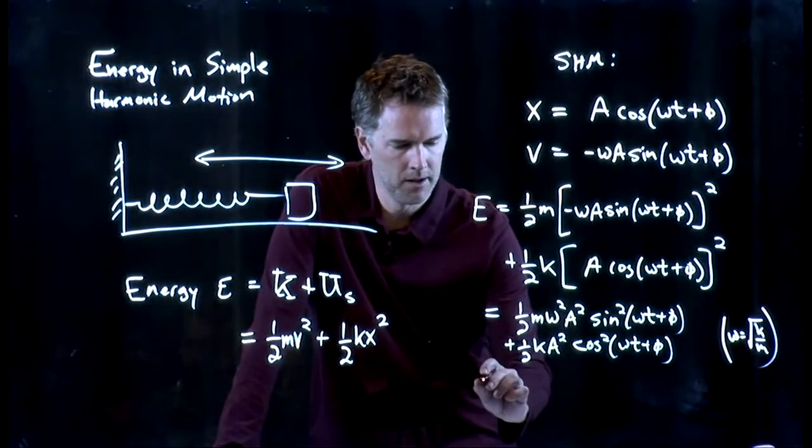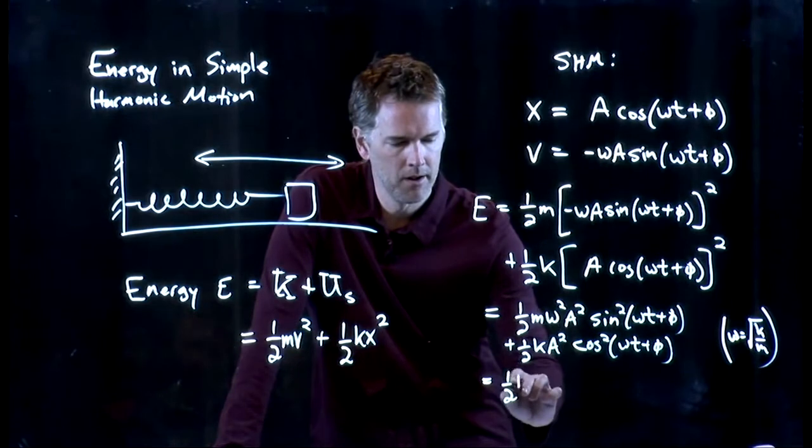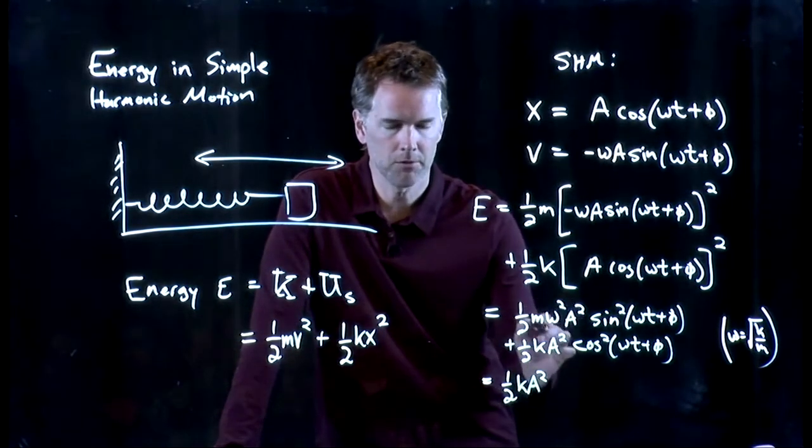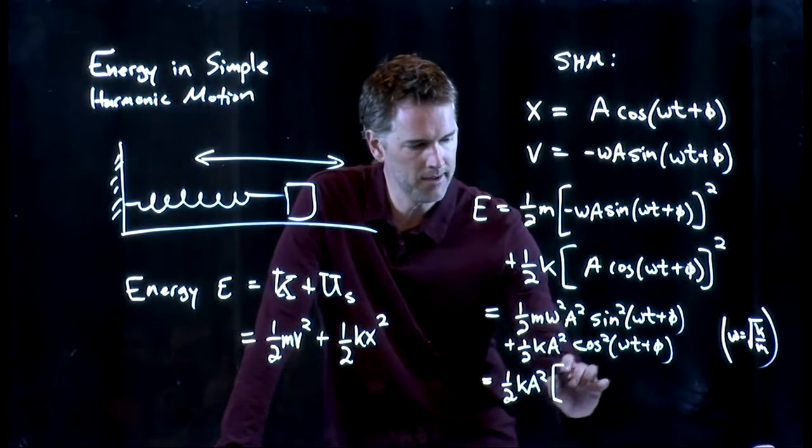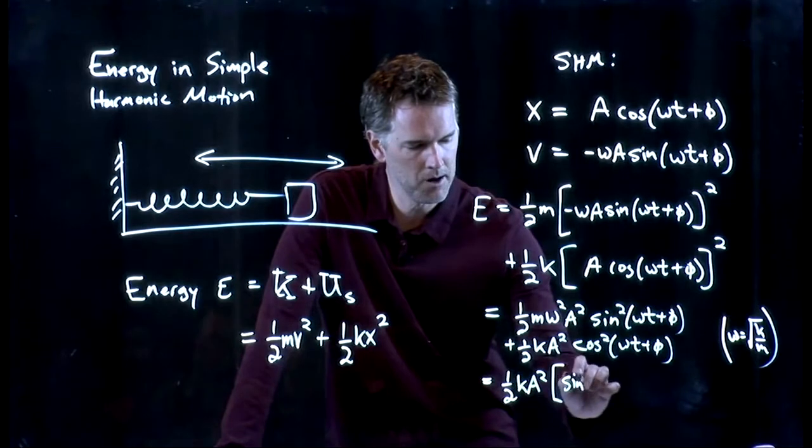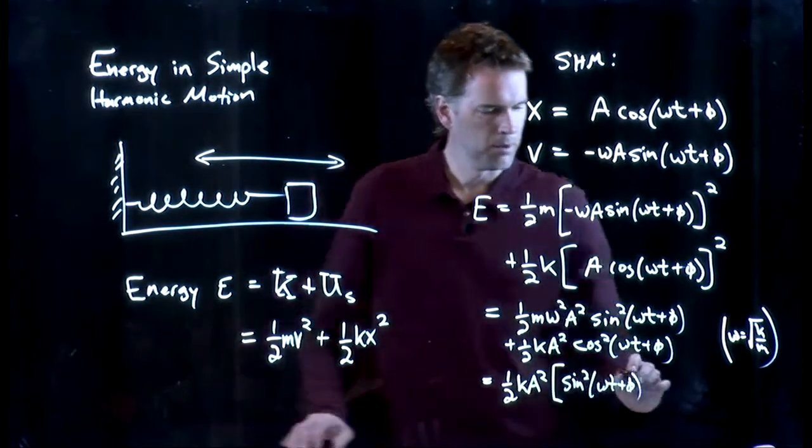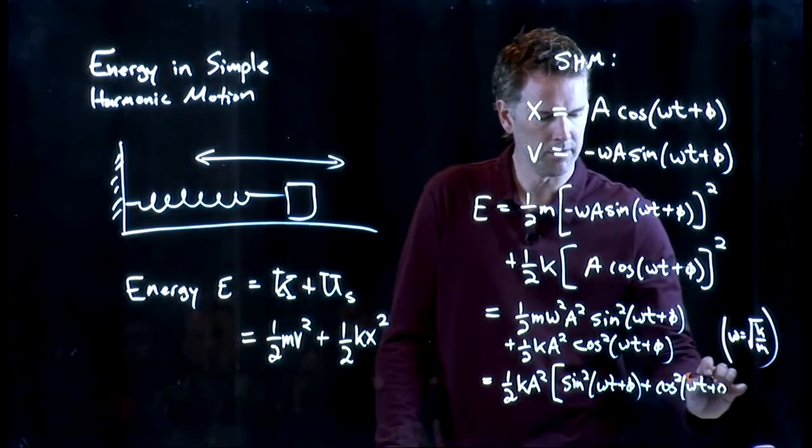And if omega squared is k over m, that m cancels out. And I get one-half k A squared on both of those terms. That term becomes one-half k A squared. And that term was already one-half k A squared. And now everything that's left is just sine squared omega t plus φ plus cosine squared omega t plus φ.